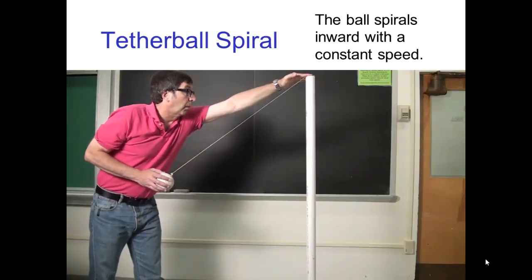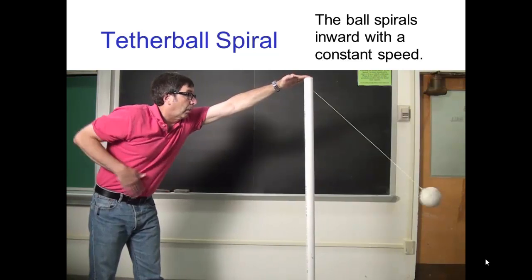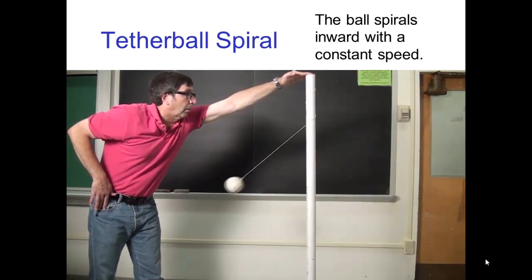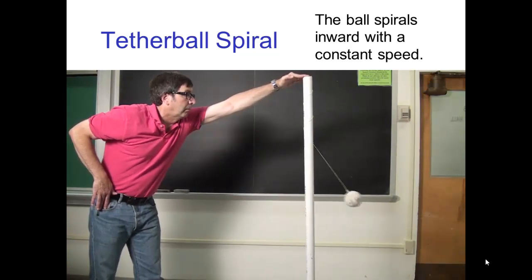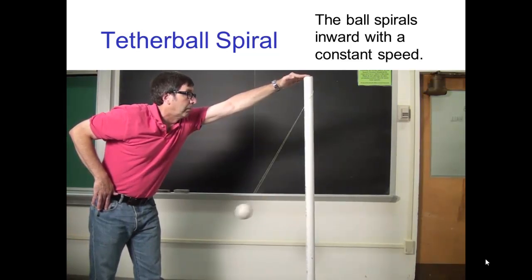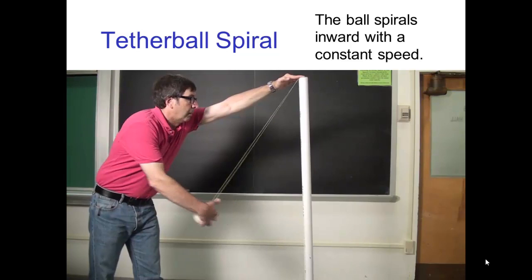Now let's look at a different type of motion. A tether ball also has a spiral path of action, but the timing and spacings are different. For the tether ball, it spirals inward with a constant speed.